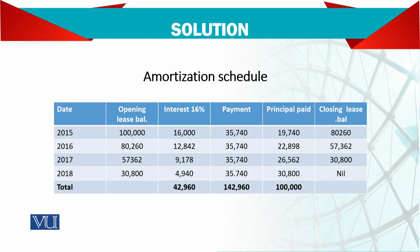After making the payment and calculating the principal paid, the balance remaining is 30,800. This 30,800 becomes the opening of the next year. At 16% exactly, you may not get the exact figure, so at the last installment we make adjustments — we are not supposed to pay more or less than required. Adding the interest figures gives 42,960, lease payments total 142,960, and the asset value is 100,000. This is the amortization schedule.